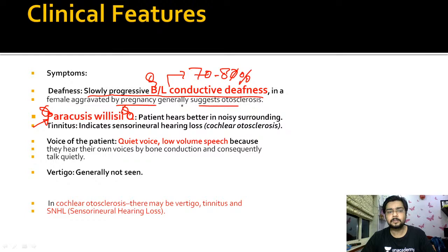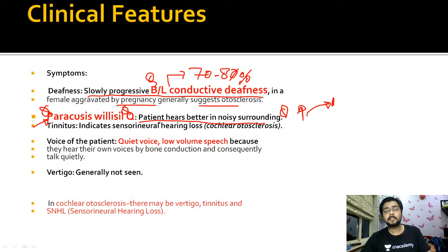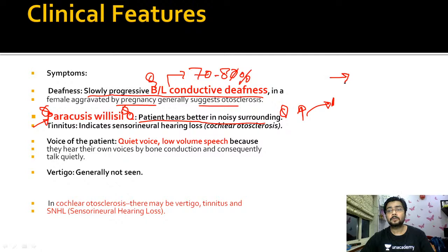This symptom is called paracusis willisii - the patient hears better in a noisy environment. What happens is that in a noisy environment, whoever is talking raises their voice intensity, and thus more sound reaches the fixed footplate with enough intensity to cause some vibrations. This phenomenon of paracusis willisii is seen in otosclerosis or any condition of bilateral conductive hearing loss.